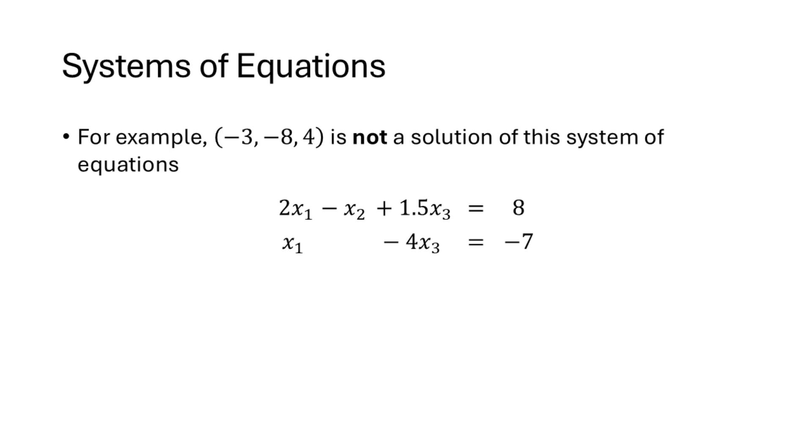As an example, the ordered triple turns out to not be a solution of this system of equations. How do we check that? We first substitute our values into the first equation to see what happens, and when we do that we find that the values make the first equation true. But that doesn't tell us one way or the other whether this is a solution or not.